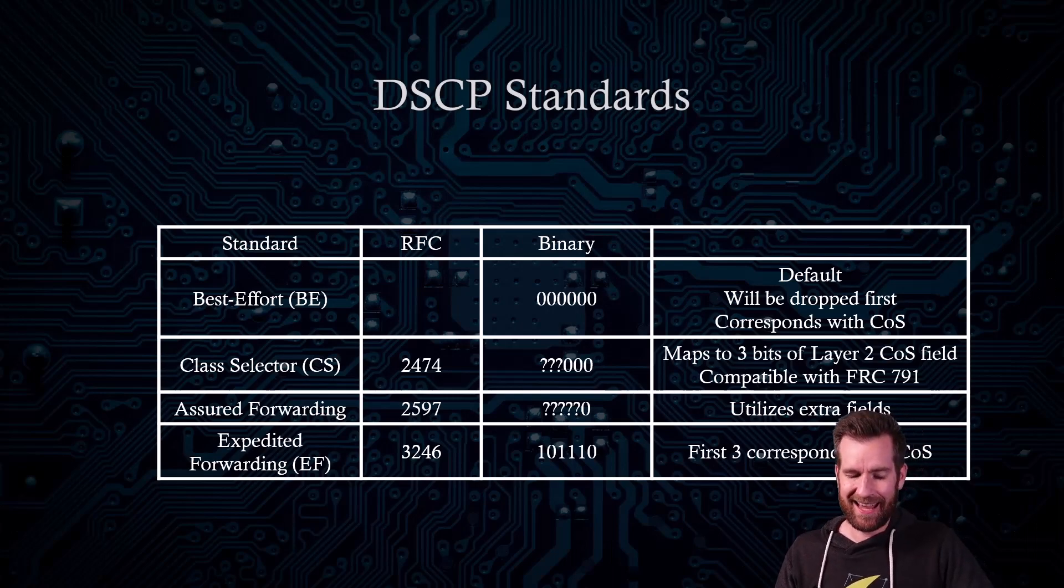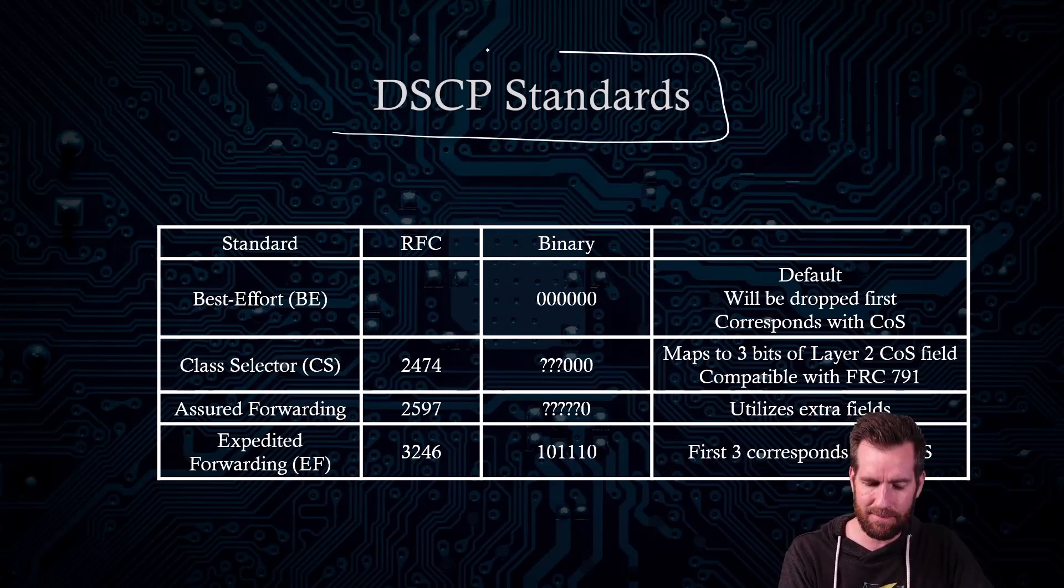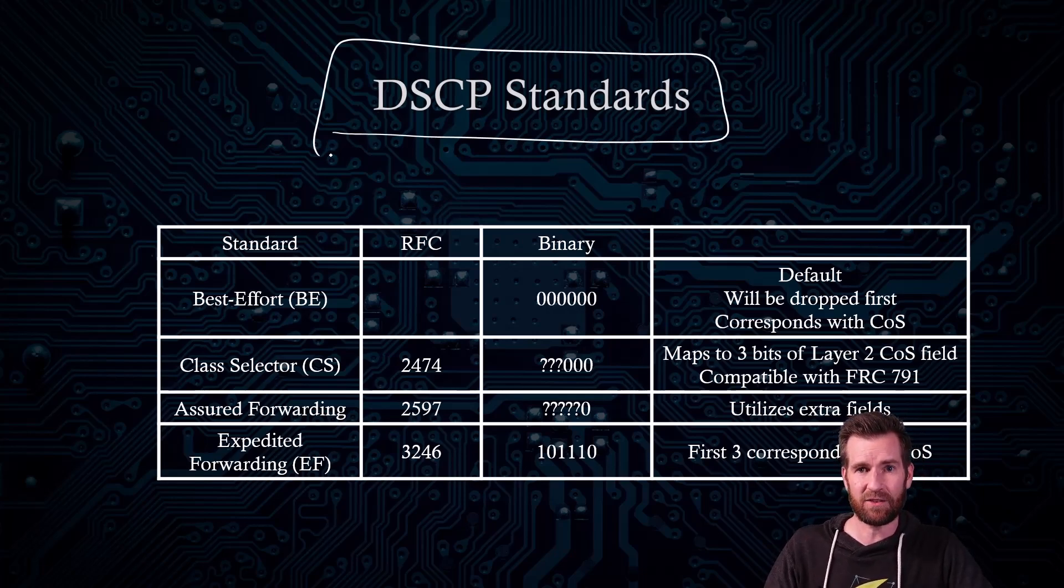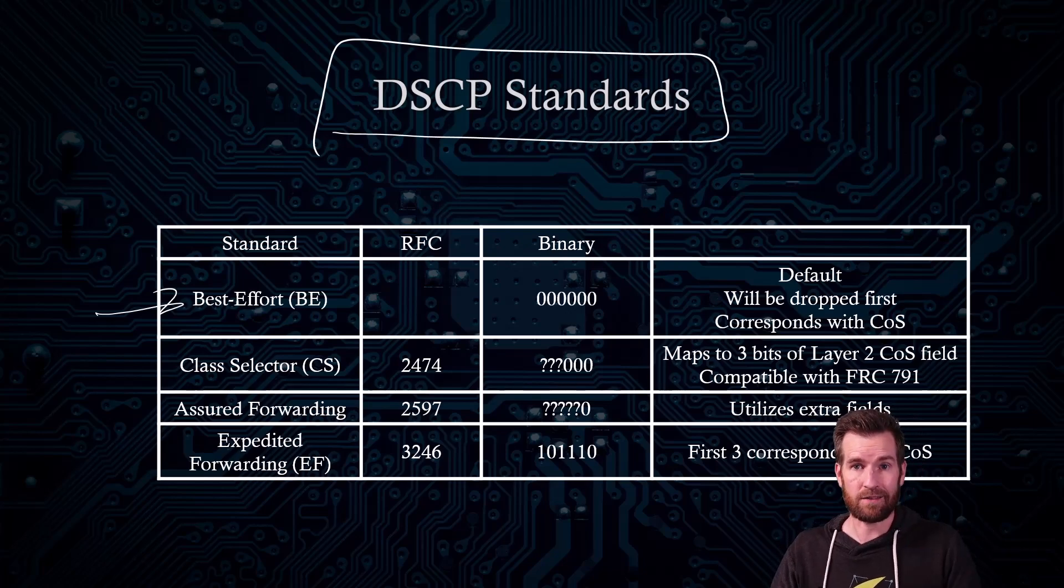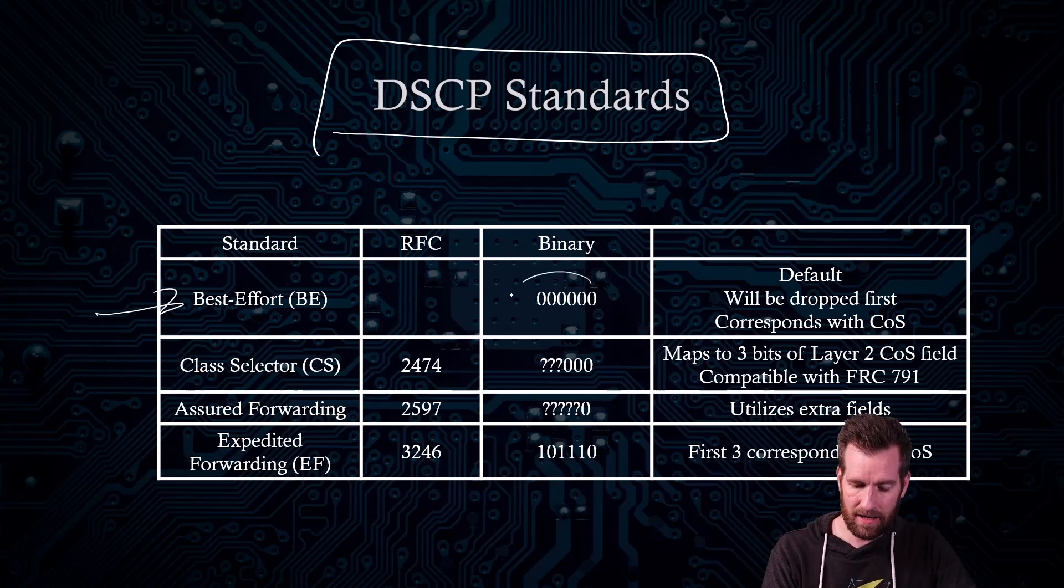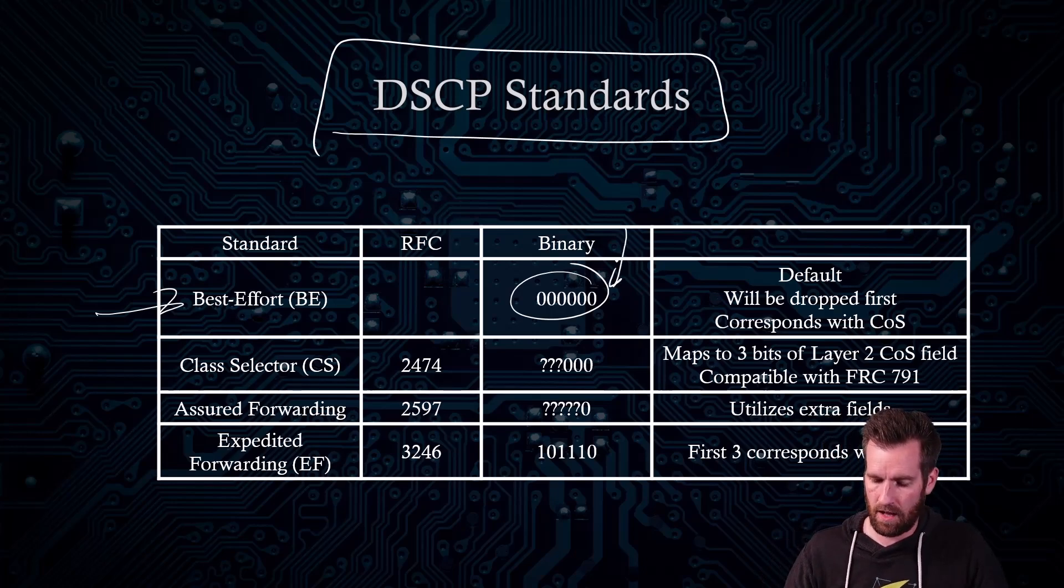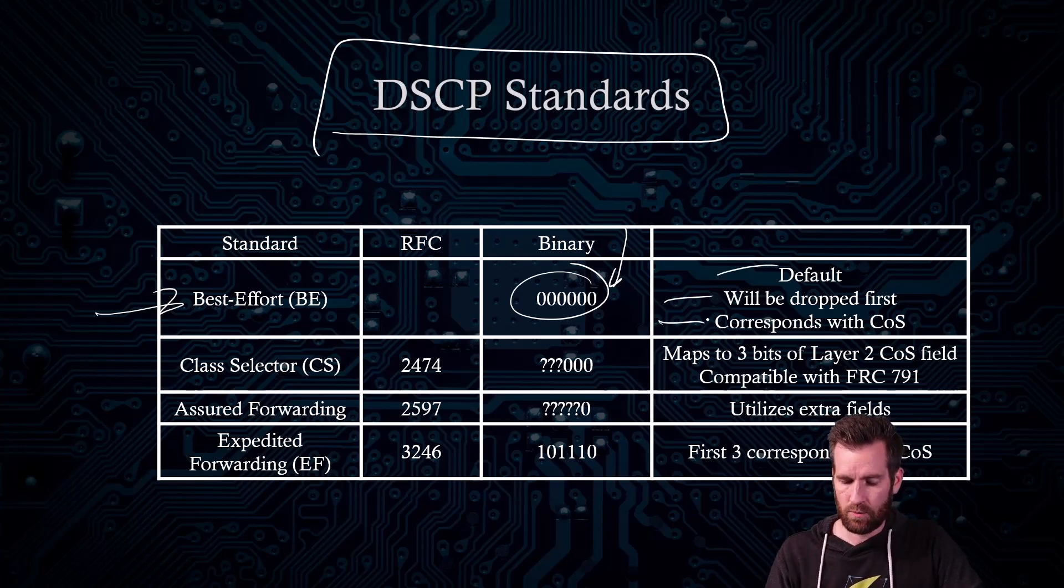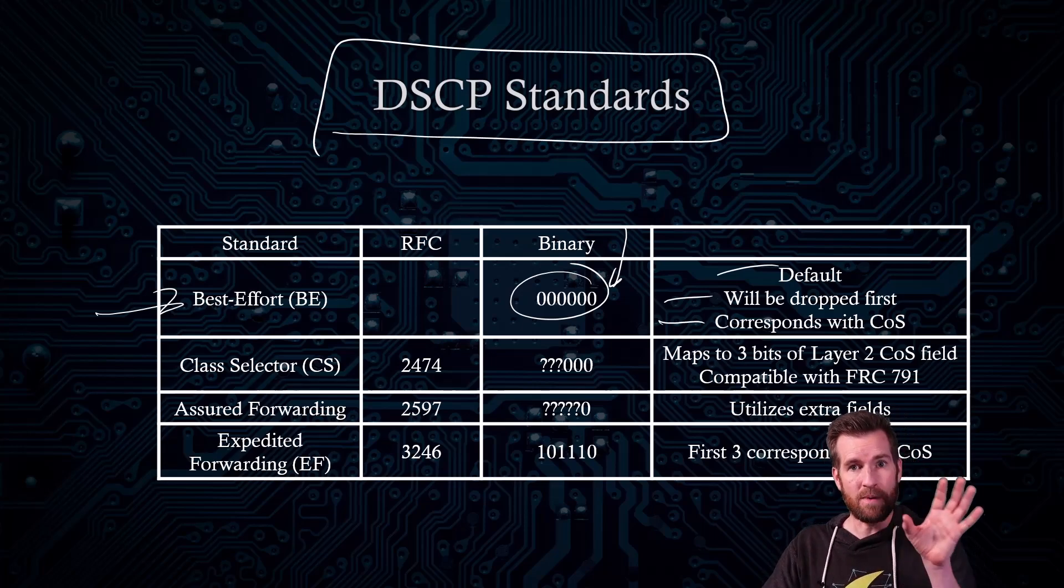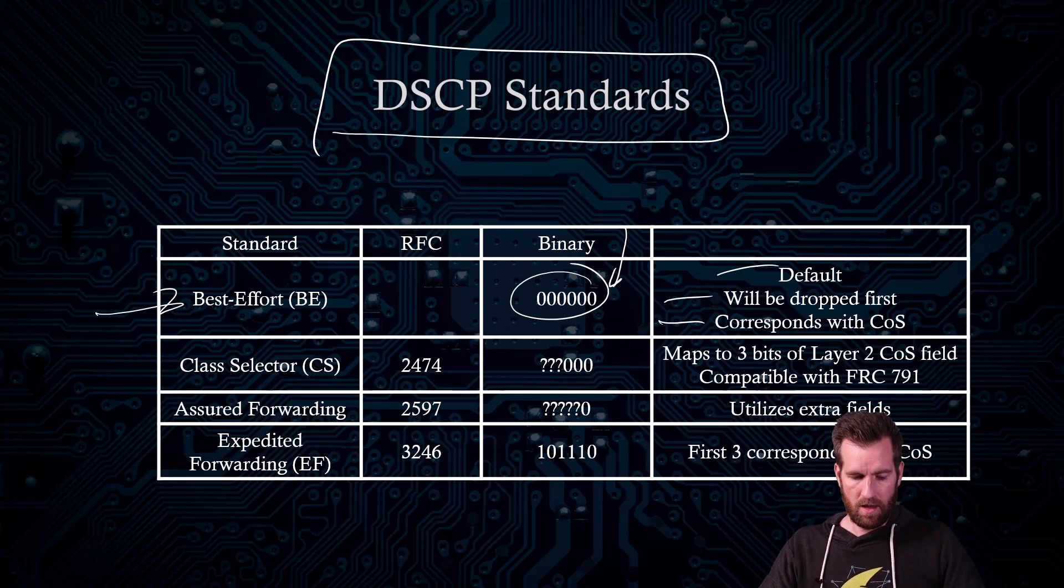So what are the standards? It's kind of interesting how this gets formed. The DSCP has several different standards that you can implement. So for one, you just have the best effort. That's the one of just, well, I'll get to it if I can get to it, but I'm not going to try to prioritize this at all. So it's just a binary 000000. Remember this DSCP field is six bits long. So this is the default. It's the first ones that are going to get dropped and it corresponds with the class of service. And remember that class of service is a layer two thing.